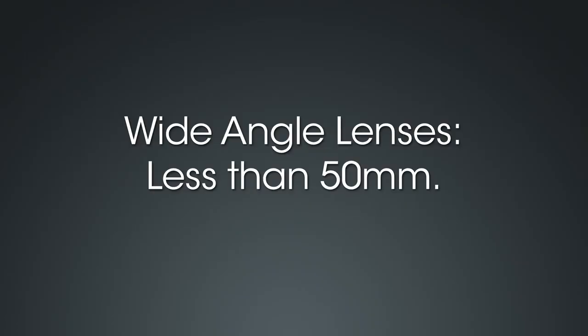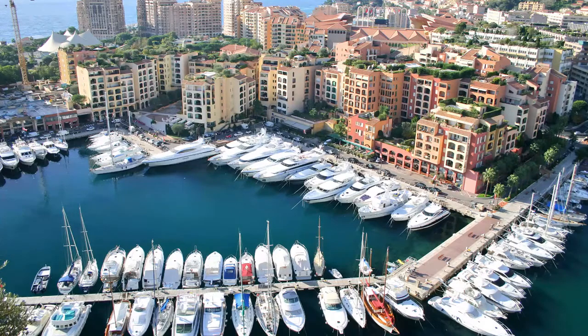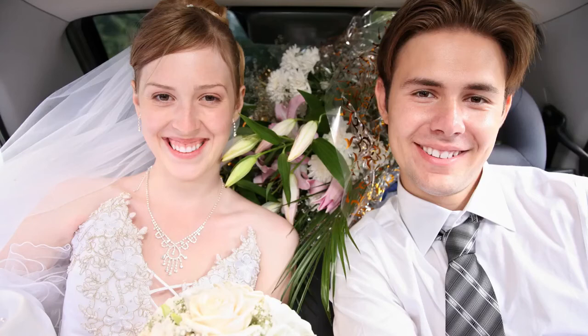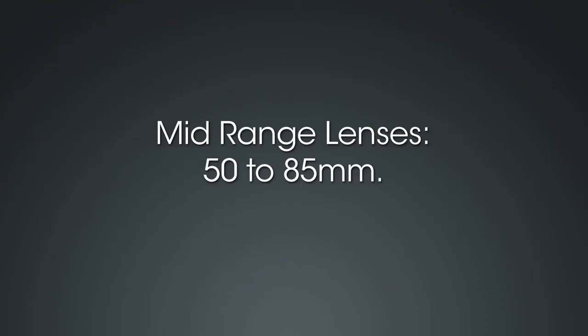Typically, lenses that are less than 50 millimeters are considered to be wide-angle lenses, so the 18 to 135 that we talked about could fall into the wide-angle range because it goes down to 18 millimeters. Wide-angle lenses are great for landscape shots, as well as situations where space is limited, and you want to include as much of the scene as possible. Mid-range lenses, or normal lenses, typically have between 50 and 85 millimeters. This range of focal lengths is great for family snapshots, portraits, and vacations. The 18 to 135 lens also falls into the mid-range category. These lenses are also referred to as walk-around lenses because they're so versatile, and can be used for a variety of subjects and shooting scenarios.